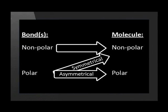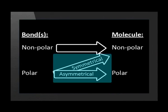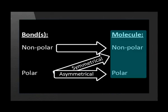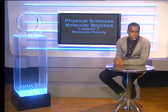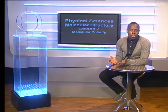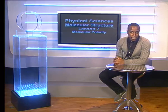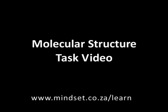In this lesson, we have seen that the shape of a molecule determines the polarity of the molecule when the bonds are polar. But how do we know what the shape of a molecule is? That is the topic for another lesson. Check out other videos in this series, especially the task video. Also look at the Mindset website at www.mindset.co.za/learn.